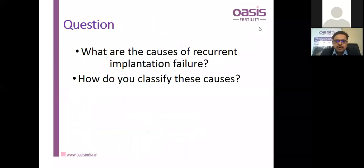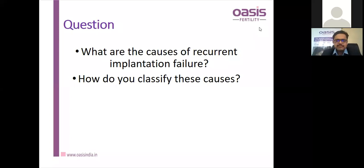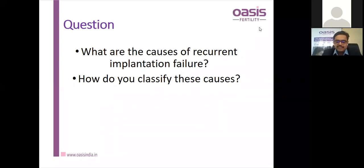There are no studies subsequent to the 2014 Kofinas article using this definition, so we are yet to get the exact incidence and prevalence of recurrent implantation failure. We will briefly discuss the theory, then go to cases and treatment. What are the causes of recurrent implantation failure and how do we classify them?